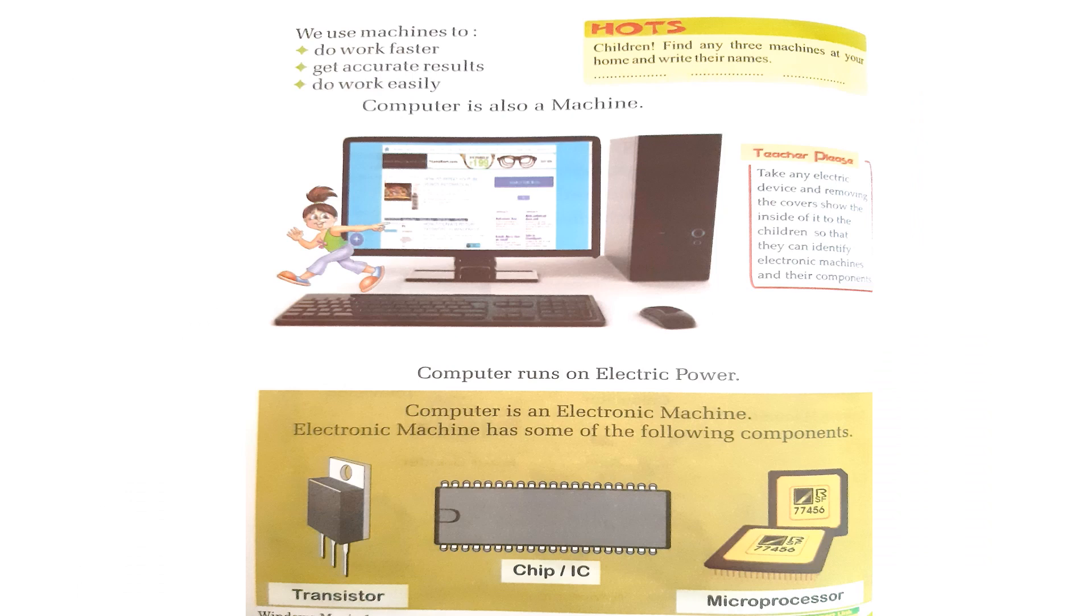Children, take your textbook page number 6. Shall we read it? Yes. Come on. We use machines to do work faster, get accurate results, and do work easily.